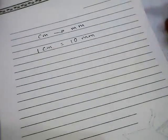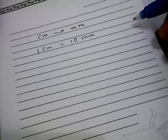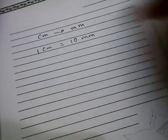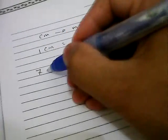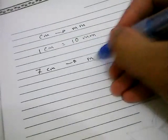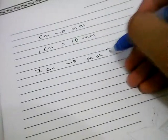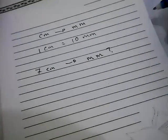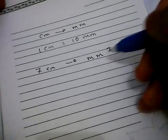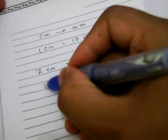Now for example, I want to know how much is 7 centimeters converted into millimeters. Well let's go ahead and solve this problem. The first thing you need to do is you need to write down the 7 centimeter.